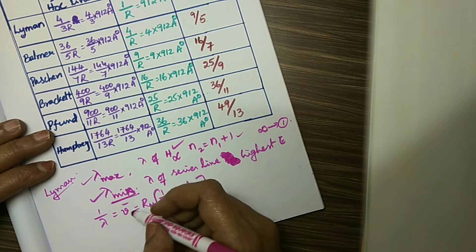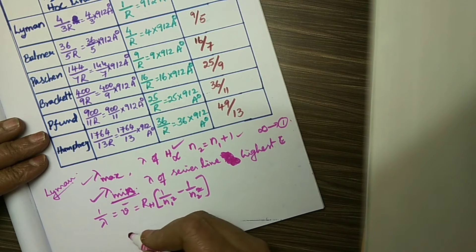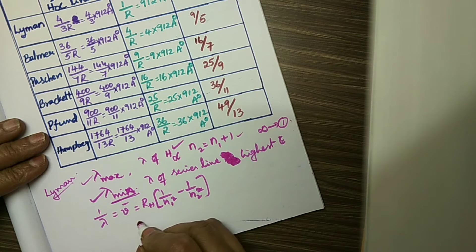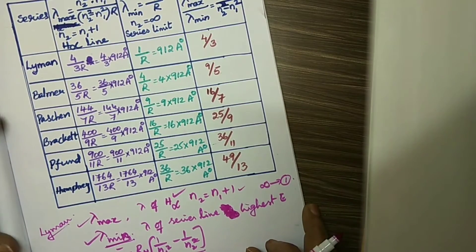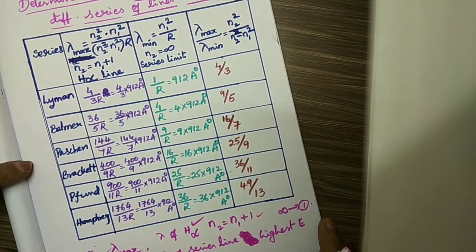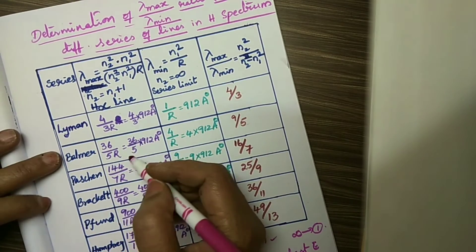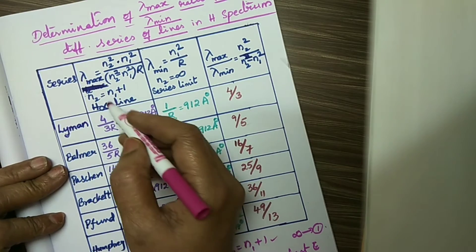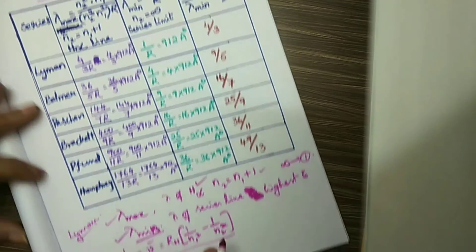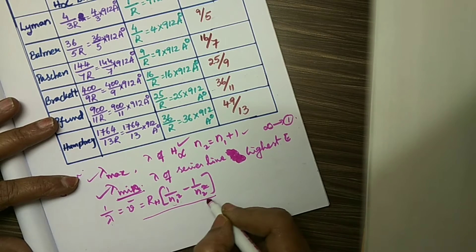Lambda max and lambda minimum can be calculated from the Rydberg equation. By using this Rydberg equation, we can calculate the wavelength or wavenumber. I have calculated for Lyman, Balmer, Paschen, Brackett, Pfund, and Humphreys series. Lambda max is obtained by substituting N2 as the next value to N1.